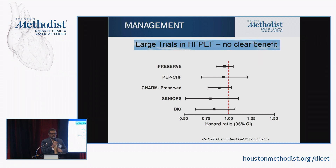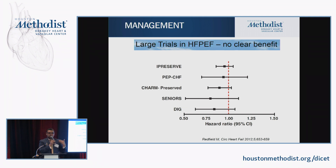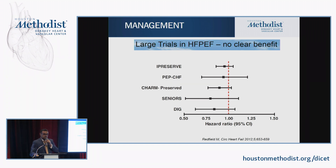The reason these drugs haven't shown benefit is that, as opposed to HFrEF — whose pathophysiology is neurohormonal activation — the pathophysiology of HFpEF is different. It is due to a chronic inflammatory state. That is why these neurohormonal drugs have not shown benefit in heart failure with preserved ejection fraction.